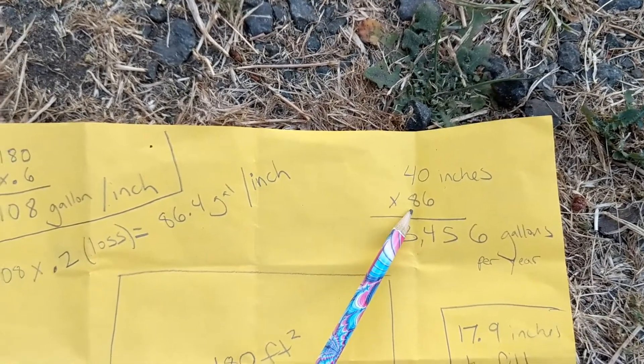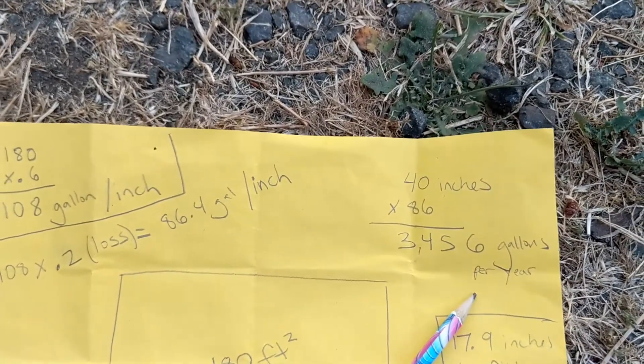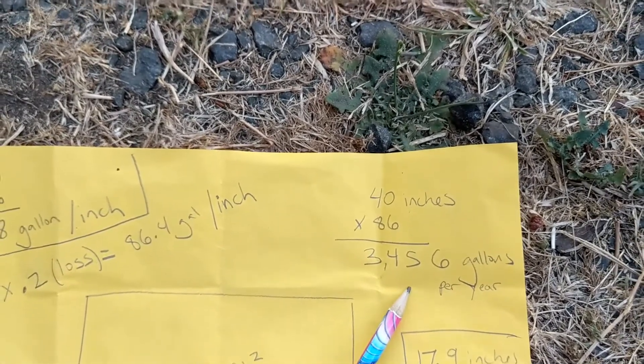So we multiplied and we got 3,456 gallons. Y lo multiplicamos por 86 y nos da un total de 3,456 galones por año.